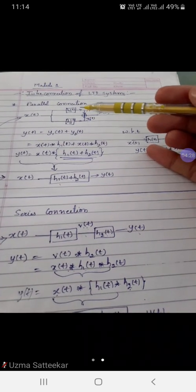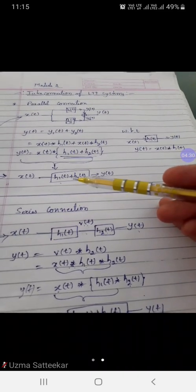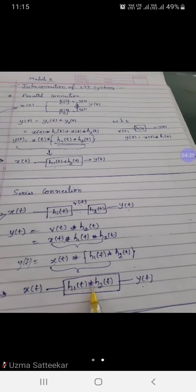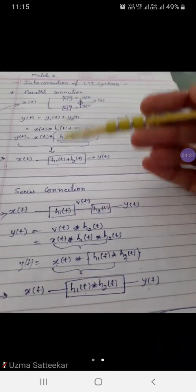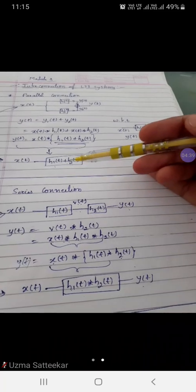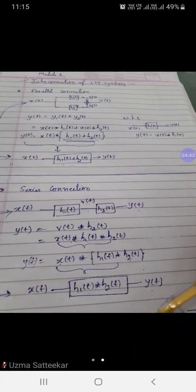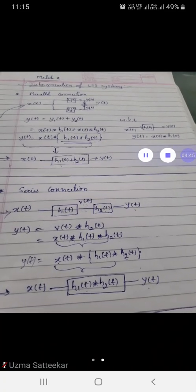Parallel connection is replaced with sum; series connection is replaced with convolution. So if you know these two—parallel and series connection block interpretations—it will be helpful for you to solve problems based on this. Thank you.